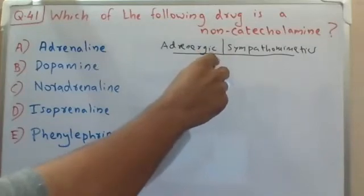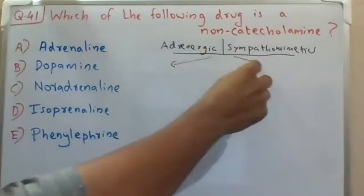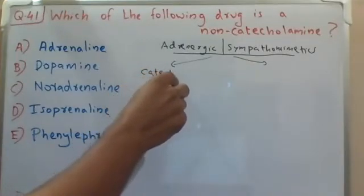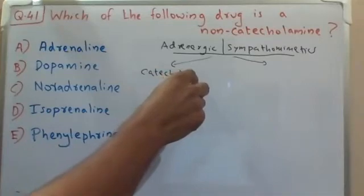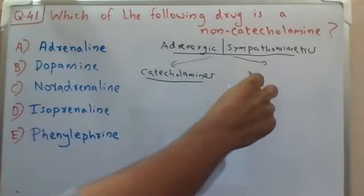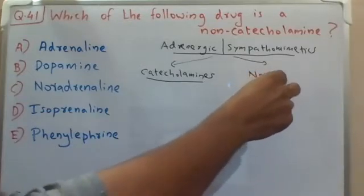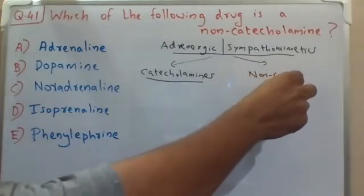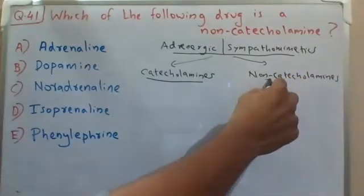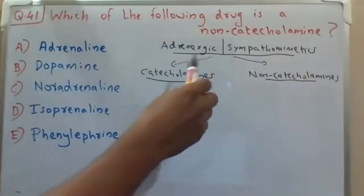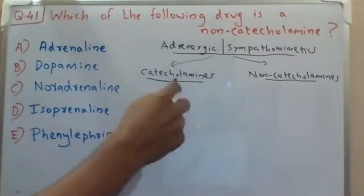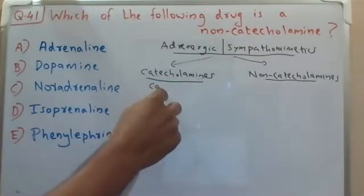Adrenergic drugs can be classified into two categories based on their chemistry. The first category is called catecholamines, and the second category is called non-catecholamines. Catecholamines contain a structure called catechol.